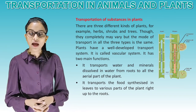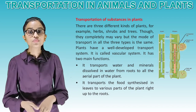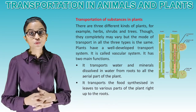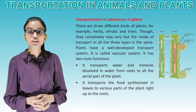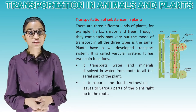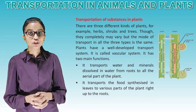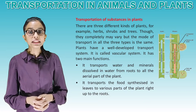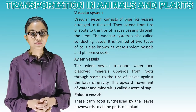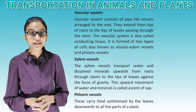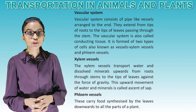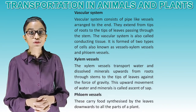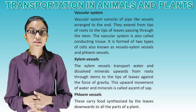Transportation of substances in plants: there are three different kinds of plants — herbs, shrubs, and trees. Though they may vary completely, the mode of transport in all three types is the same. Plants have a well-developed transport system called the vascular system. It has two main functions: it transports water and minerals dissolved in water from roots to all the aerial parts of the plant, and it transports food synthesized in leaves to various parts of the plant right up to the roots. The vascular system consists of pipe-like vessels arranged end to end, extending from tips of roots to the tips of leaves passing through the stem, and is also called conducting tissues. It is formed of two types of vessels: xylem vessels and phloem vessels.